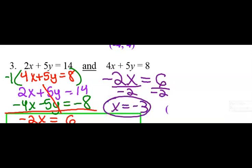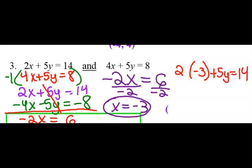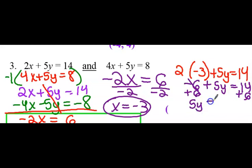Now I'm going to plug that back in. It doesn't matter which equation, so I'm going to pick the first one. So x equals negative 3. I'm going to plug in negative 3 for x. 2 times negative 3 is negative 6. I want to get the y by itself, so I'm going to add 6 to both sides, and I get 5y equals 20. Divide 5 to both sides, and y equals 4.